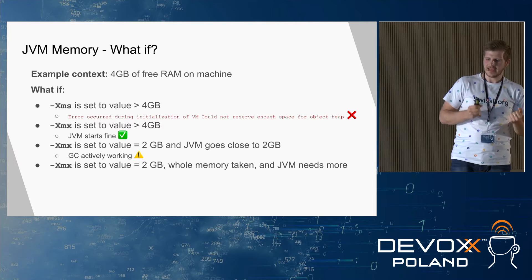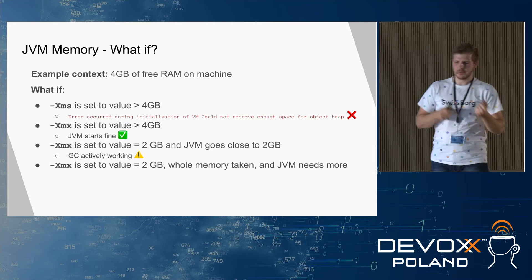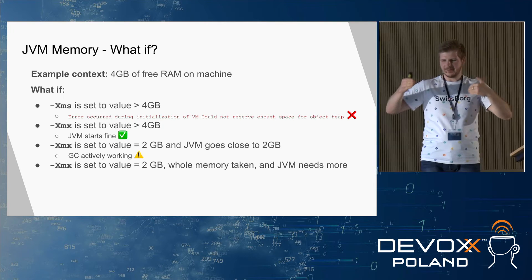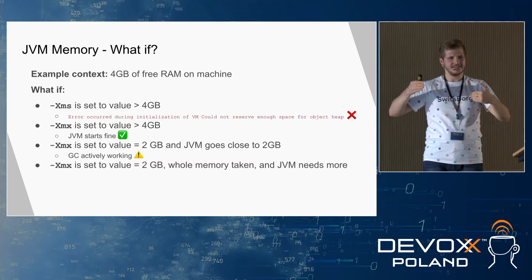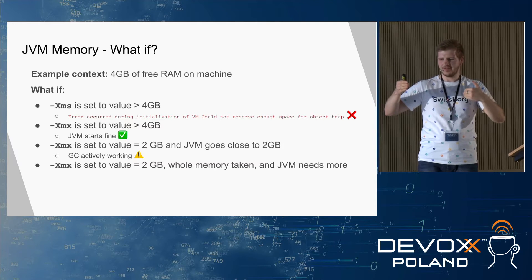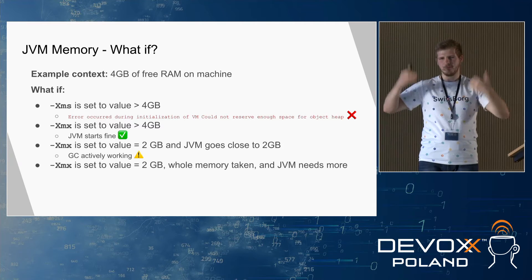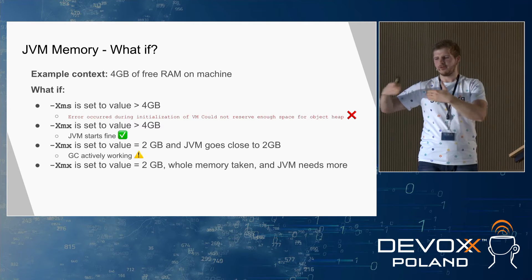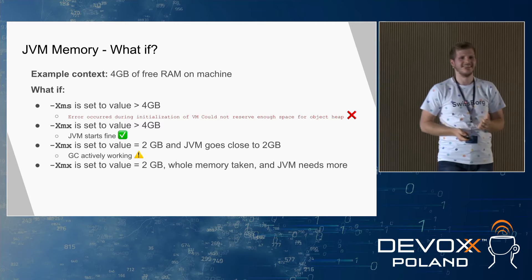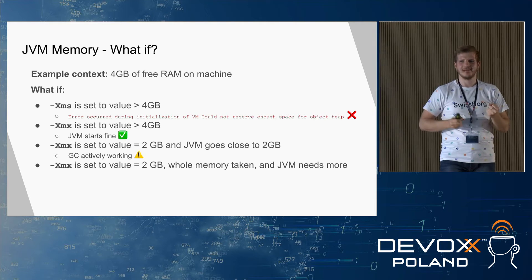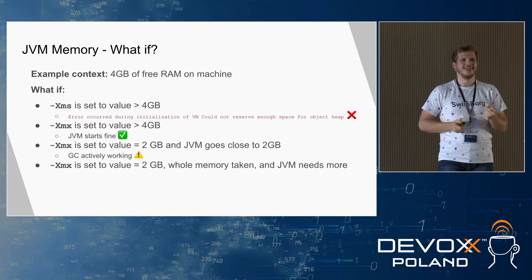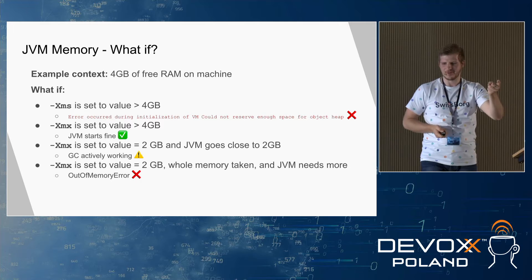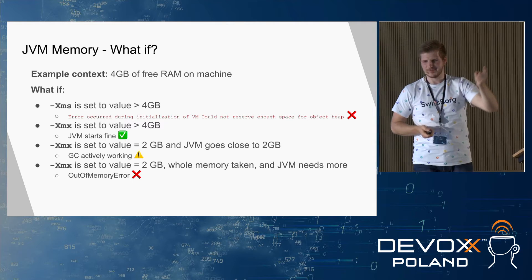What if XMX is set to 2 GB, the whole memory is taken, GC doesn't help anymore, but we need to allocate more objects? Out-of-memory error.